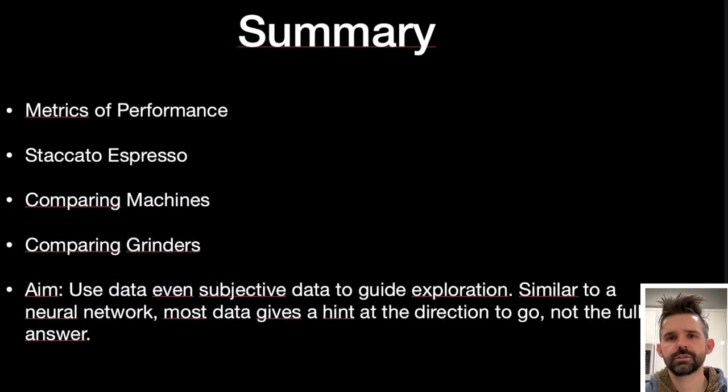So in summary, we talked about metrics of performance. We talked about a deeper understanding of staccato espresso. And then we went into some comparisons of coffee machines and grinders. And really, my aim is to better understand espresso. And espresso has so many variables involved that it really reminds me of multi-layer neural networks, where you don't understand what's going on inside each layer. And you can only see the input and the output. And so you kind of have to poke at it in different ways to get it to bend to your will and find improvements. So I hope this was helpful in your espresso journey. And this has definitely been a great stepping stone for mine.